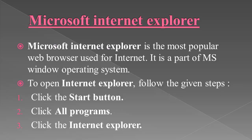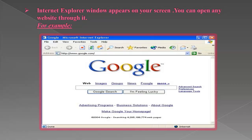First of all, we are going to discuss Microsoft Internet Explorer. Microsoft Internet Explorer is the most popular web browser used for internet. It is a part of MS Windows operating system. To open Microsoft Internet Explorer, follow the given steps: click the Start button, then click All Programs, and then click on Internet Explorer. After the Internet Explorer window appears on your screen, you can open any website through it. Here I am showing the picture of Internet Explorer.